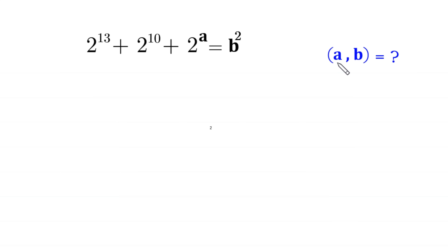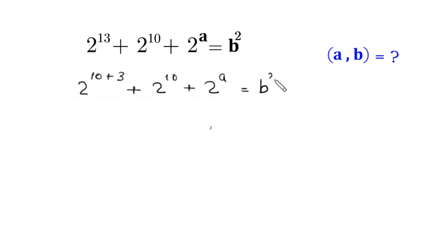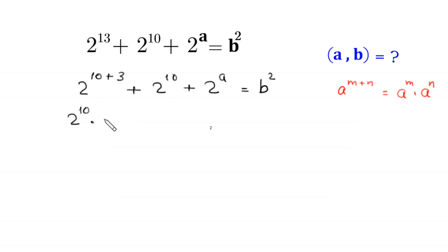Let's start. This 2 to the power 13 can be written as 2 to the power 10 plus 3, plus 2 to the power 10, plus 2 to the power a, is equal to b squared. By using the property that a to the power m plus n is equal to a to the power m times a to the power n, this 2 to the power 10 plus 3 will become 2 to the power 10 times 2 to the power 3, plus 2 to the power 10, plus 2 to the power a, is equal to b squared.